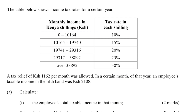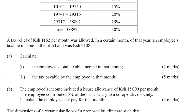Study the table of taxation carefully to identify whether the amounts are given per annum or per month, and also the tax rates in percentage or in pounds. A tax relief of 1,162 per month was allowed in a certain month of that year. An employee's taxable income in the fifth band was 2,108. Part A1: calculate the employee's total taxable income in that month. Part A2: the tax payable by the employee in that month.